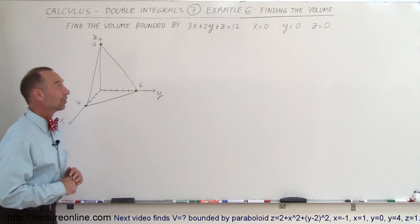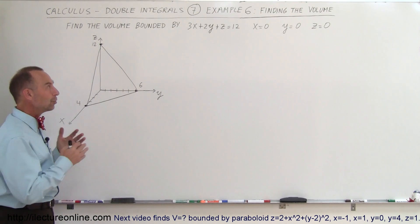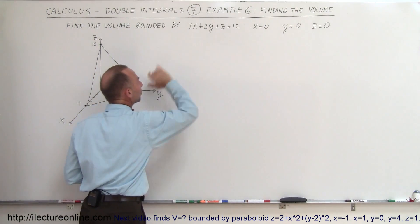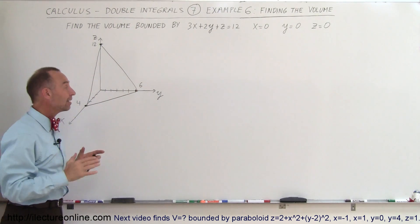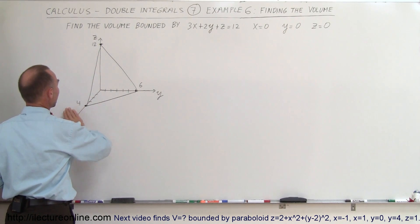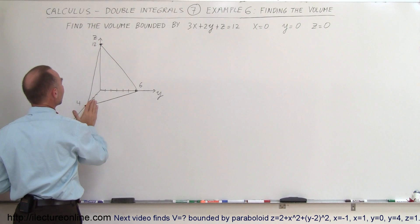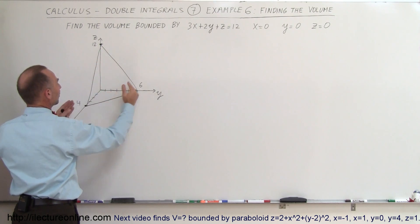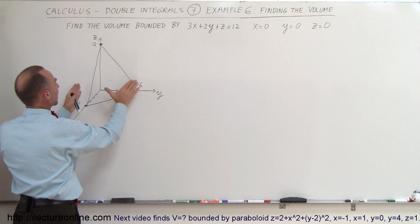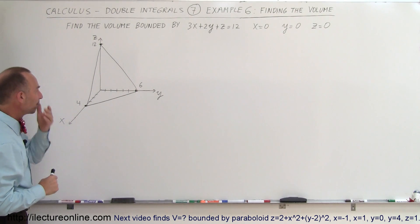Welcome to ElectronLine. Here's another example of how to find the volume. We're going to use the same plane defined by the same equation as the previous example, except in this case the volume is going to be defined by the xy plane, the yz plane, and the yx plane. So it's basically this particular triangular corner of this xyz coordinate system.